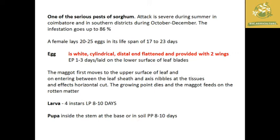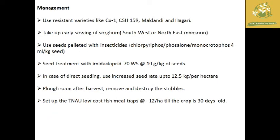The larval lifespan is around 8 to 10 days and larvae are classified into four instars. The pupa is found inside the stem at the base as well as in the soil, and pupation takes around 8 to 10 days in the life cycle.